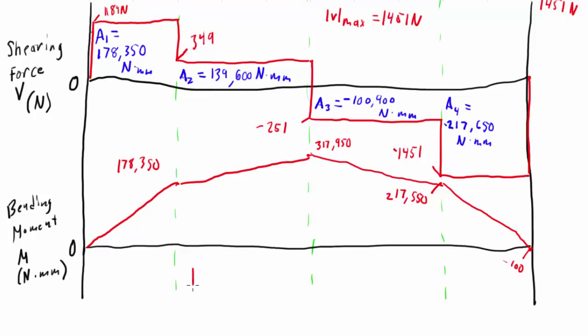So last but not least for our bending moment diagram here, we have our Mmax is equal to 317,950 Newton millimeters. Now again, there's some round-off error. The maybe more analytically accurate answer is going to end up being 318,000 flat, and use that value later on in our problem.